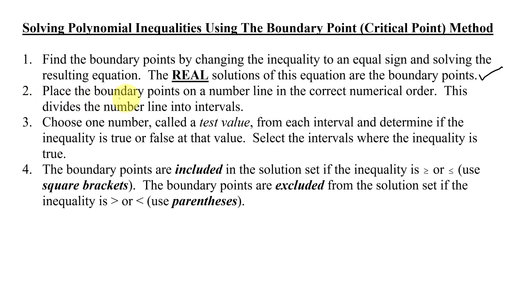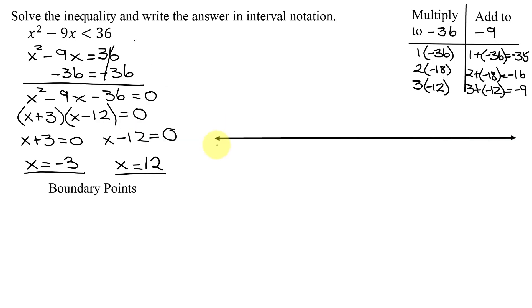Step 2 says to place the boundary points on a number line in the correct numerical order. This divides the number line into intervals. So I need to draw my number line. Negative 3 is less than 12, so it should be plotted to the left of 12. Here's x equals negative 3, here's x equals 12. And those two numbers divide the number line into three separate regions. I have the region that's less than negative 3, the region between negative 3 and 12, and the region that is greater than 12.